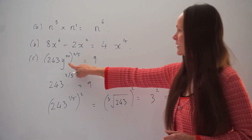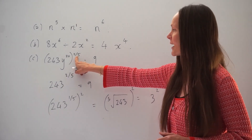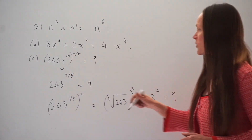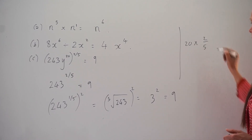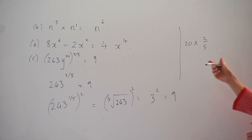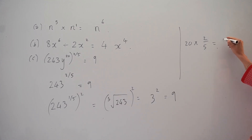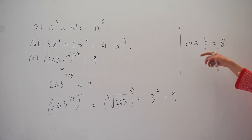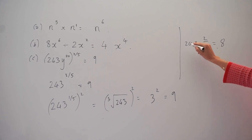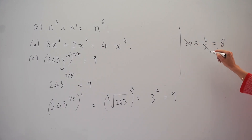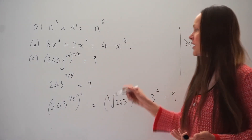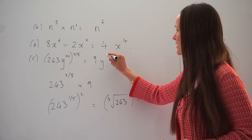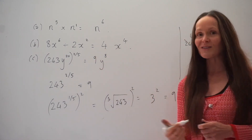Now looking at the letter y, we're multiplying the powers together: 20 multiplied by 2 fifths. With a calculator you get 8. Without a calculator, 20 divided by 5 is 4, and 4 multiplied by 2 gives you 8. So when you times these powers together you get 8, which leaves us with y to the power of 8. So here is the final answer.